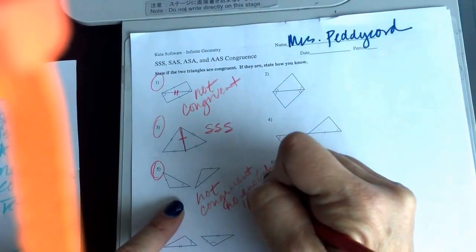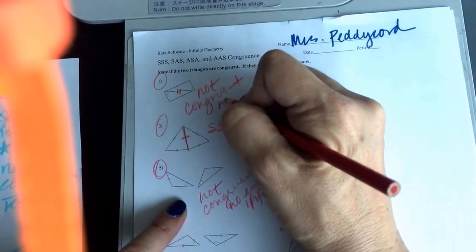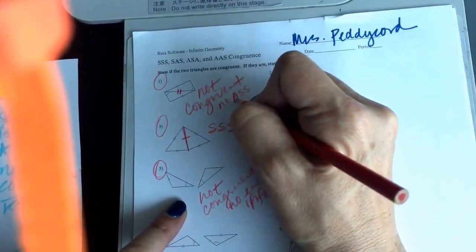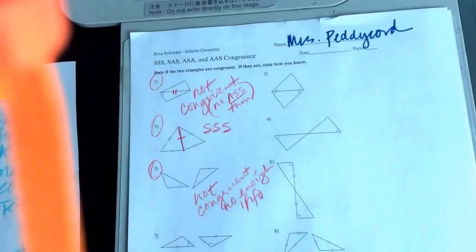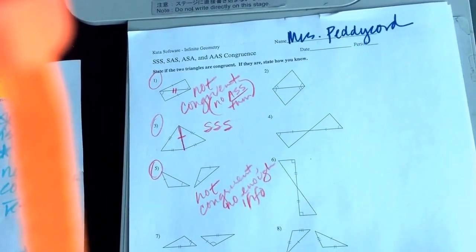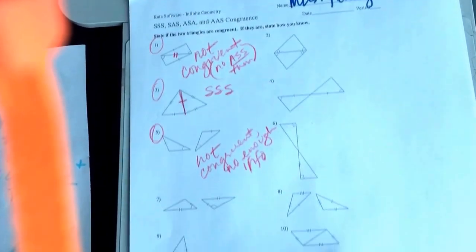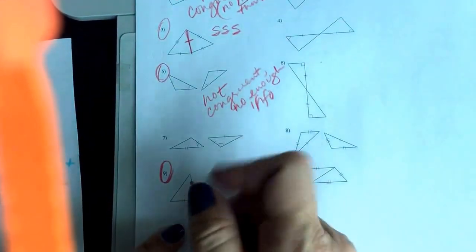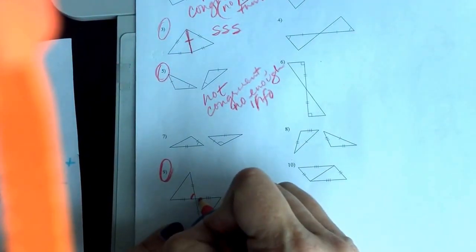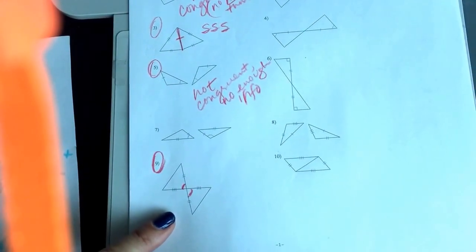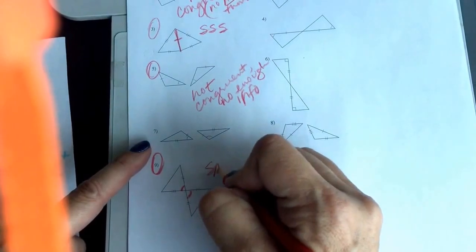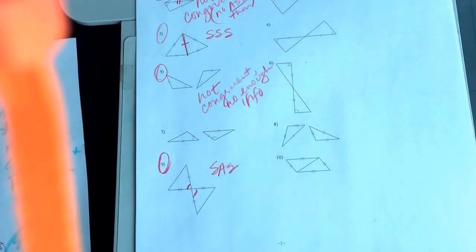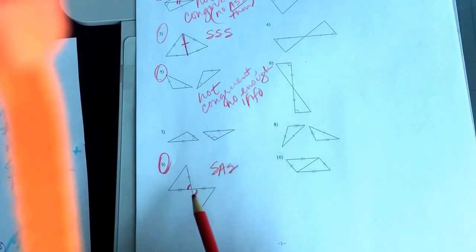It does say state how you know, so let me go back. I feel like up here I could say that there's no ASS theorem, because that's what we had. Kind of funny, but it is what it is. We know we don't have the ASS theorem. I want you to check, take a look see at nine. In nine down here, I'm going to recognize that there's vertical angles going on and I can mark those. And as soon as I mark those vertical angles, I see I have a side angle side relationship. So these two triangles would be congruent by side angle side.